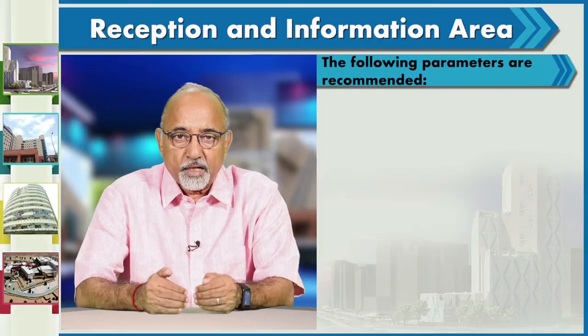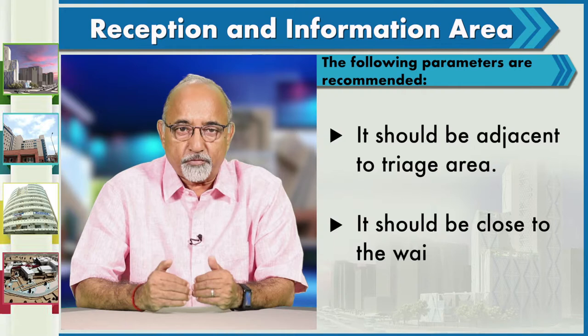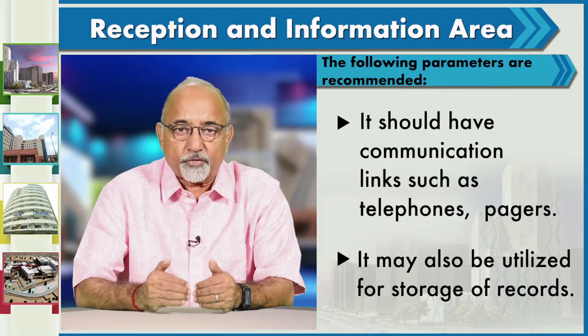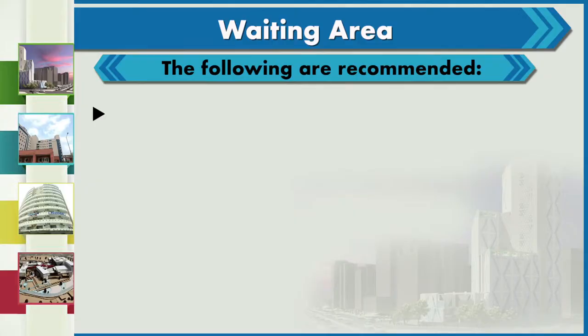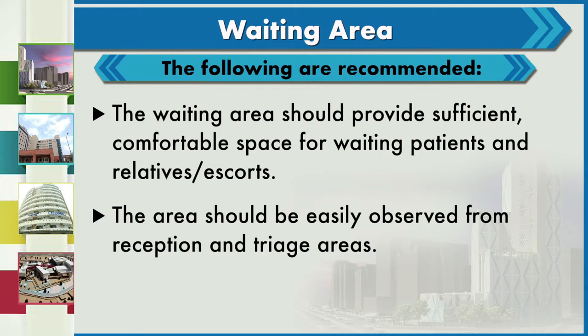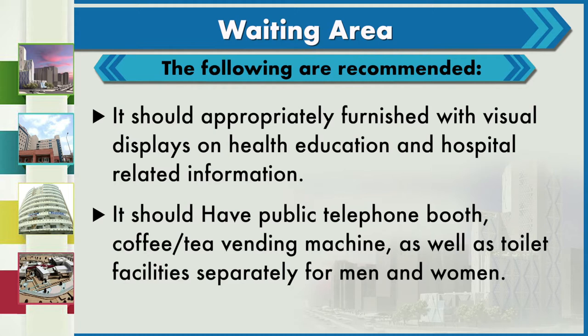Reception and information area: it should be adjacent to the triage area, close to the waiting areas, and have communication links such as telephones; it should also be utilized for storage of records. Waiting areas should provide sufficient comfortable space for patients, relatives and escorts. The area should be easily observed from reception and triage, be appropriately furnished with visual displays on health education and hospital-related information, and have public telephone booths, coffee and tea vending machines, and toilet facilities separately for men and women.